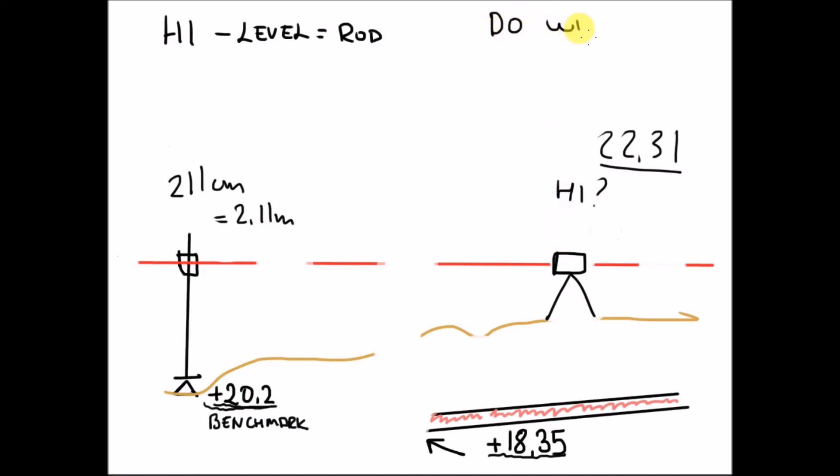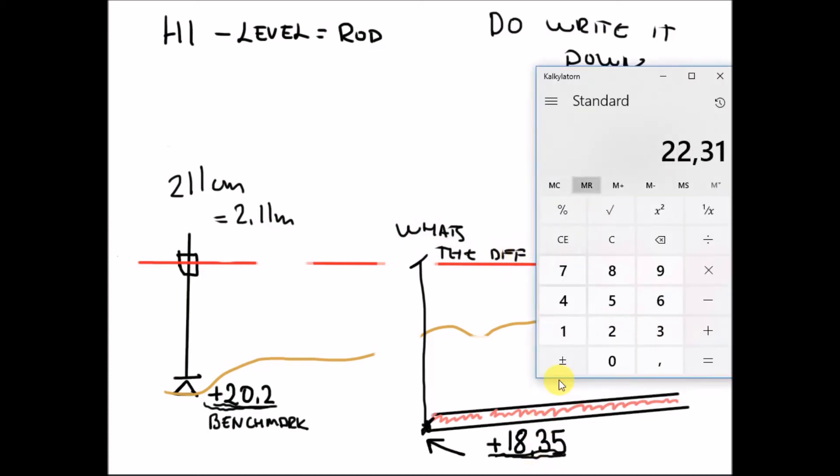So now you want to set out a pipe invert. And you have a height, a spot height, a drawing level, whatever you want to call it, at plus 18.35. So the staff reading that will become 22.31 minus 18.35. So this will be 3.96. So you take your recall minus 18.35, that would be staff reading.